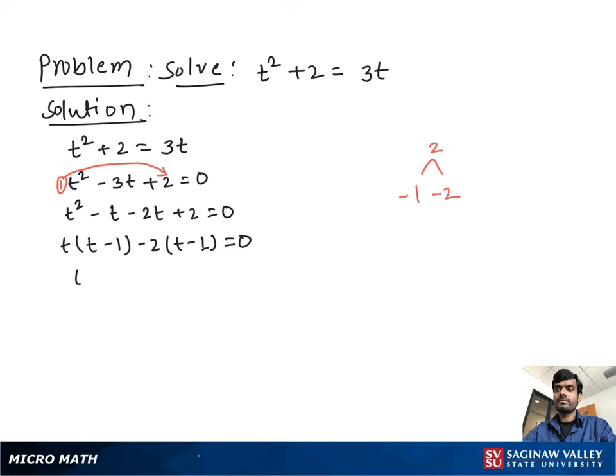Now from both sides, we take out t minus 1 as a common. Then we have t minus 2.